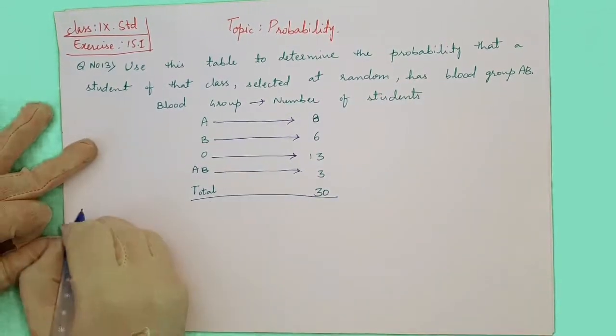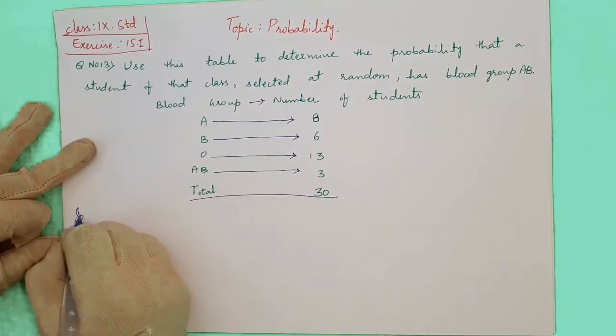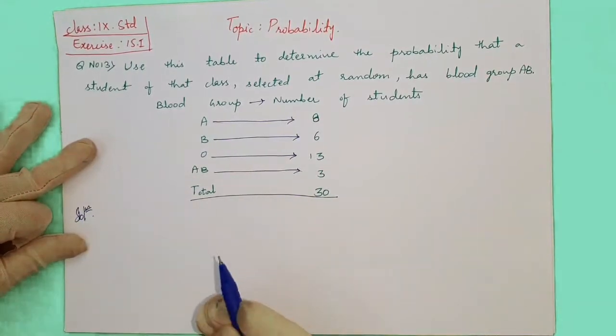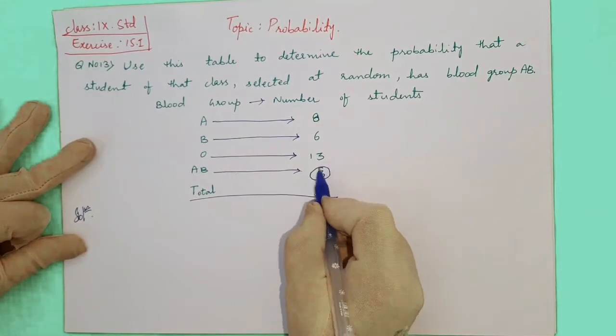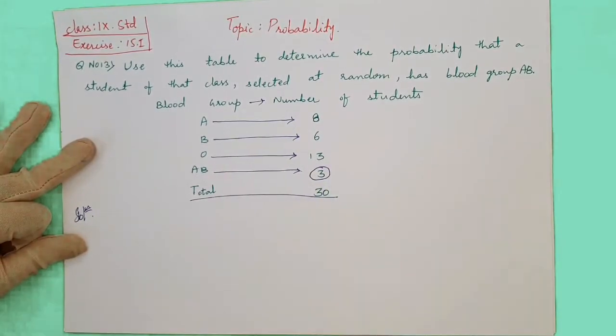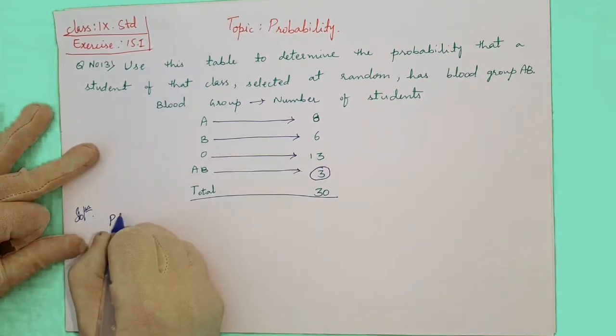So let us see the solution here. Directly also we can say it is very easy. AB, it is 3 and total is 30. So it will become 3 by 30. The same way we will write in the solution here.